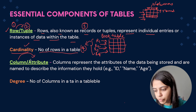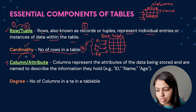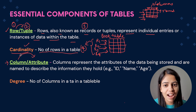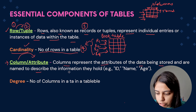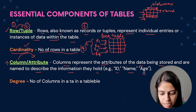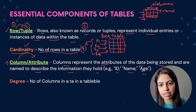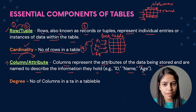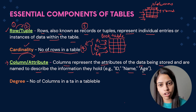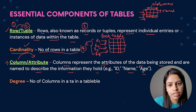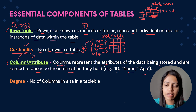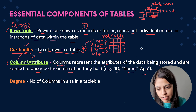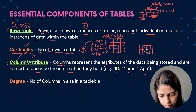Now the second term is columns or attributes. 'Column' is the generic name we tend to remember, but 'attribute' is something we tend to forget. So column is also called as attribute. Columns represent the attributes of the data being stored and are named to describe the information they hold — consider ID, name, and age. Basically, columns are the attributes the table is having. Consider that I am a person — I may have attributes like an ID, a name, an age, a roll number, and much more. All those attributes can be stored in the table as columns.